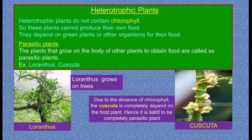Now we are going to study different types of heterotrophic plants. The first type is parasitic plants. The plants that grow on the body of other plants to obtain food are called parasitic plants.